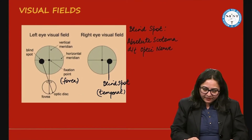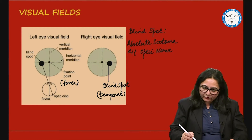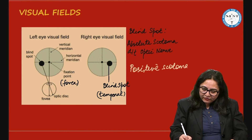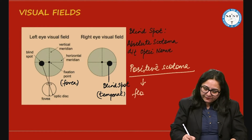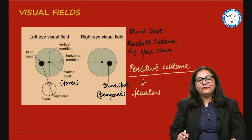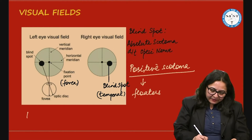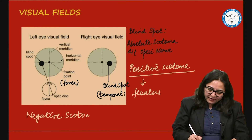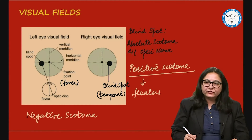Scotomas can also be classified as positive scotomas or negative scotomas. A positive scotoma means you are seeing something abnormal in the visual field — it has a positive physical presence. For example, vitreous floaters due to muscae volitantes are an example of positive scotoma. A negative scotoma means there is an absence of visibility in that area — for example, the blind spot is an absolute negative scotoma where nothing is visible.